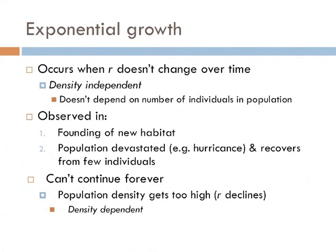Exponential growth occurs when the growth rate R doesn't change through time. Think of it this way: if 2 becomes 4, and 4 becomes 16, then 16 becomes 256 — in a few generations, populations can explode. In ecology, this is known as density-independent growth, meaning the growth rate R does not depend on the density of the population. These kinds of growth rates are found when individuals found a new habitat, such as the ancestors of Darwin's finches when they first reached the Galapagos Islands. Another example is when a population is completely devastated by a major disturbance such as a hurricane and then recovers from just a few individuals.